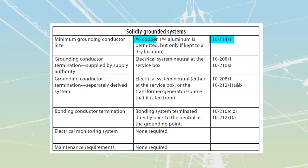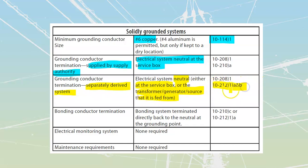The grounding conductor termination — if it's going to be supplied by our supply authority, it is going to be the electrical system neutral at the service box itself that is grounded. So we've got a finder neutral inside of either a panel or a switch, and we're going to ground that down. If it is going to be on a separately derived system — on a genset or a transformer, where we go from a 600 system down to 120/240 or something like that — then I have to connect it to my neutral, but I have the choice to do it at the service box or at the transformer, generator, or other source. Rules 10-2-12-1A and B are the critical ones to look at for those.